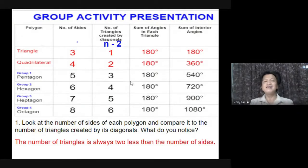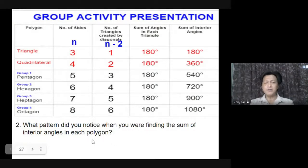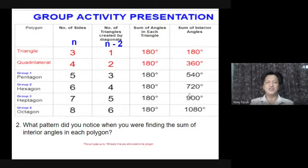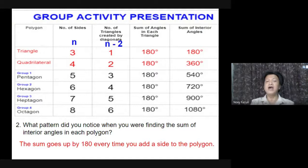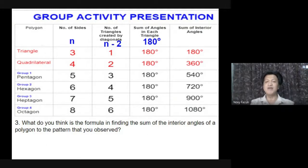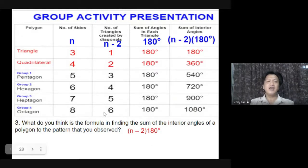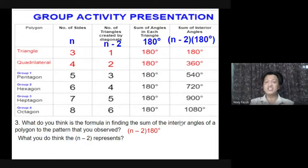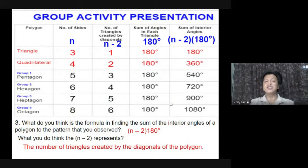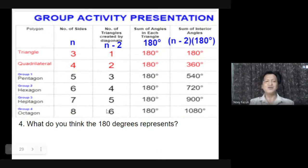Number three: What do you think is the formula for finding the sum of the interior angles of a polygon based on the pattern you observed? Yes, Shahina — very good answer — that is the quantity (n minus 2) multiplied by 180. That is the formula, take note of that. Next follow-up question: What does the quantity (n minus 2) represent? Yes, Gabriel — very good answer — it is the number of triangles created by the diagonals of the polygon.